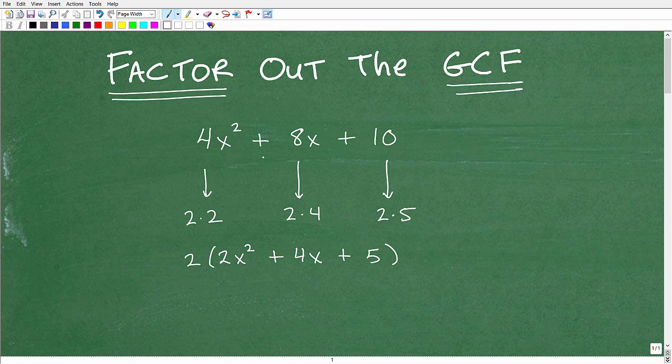Let's say I have this problem: 4x squared plus 8x plus 10. The question could come at you in different ways. I could say factor this polynomial, factor the expression, or factor the quadratic trinomial. Lots of different ways to technically describe this. Or I could give you explicit directions to say factor the greatest common factor out of this trinomial.